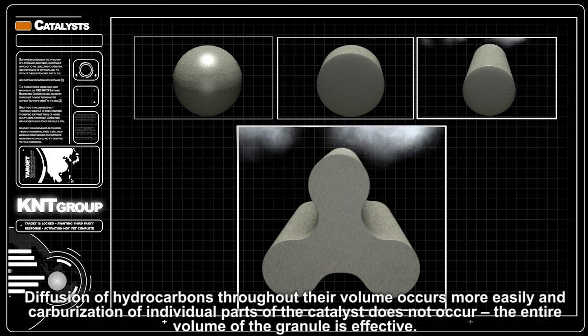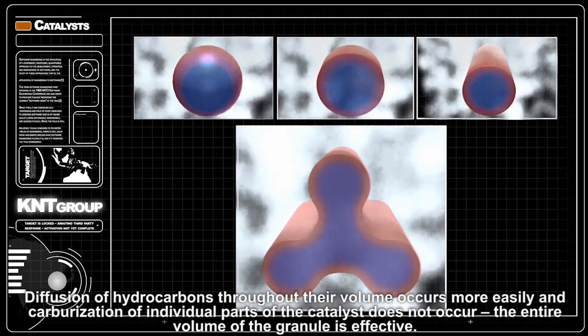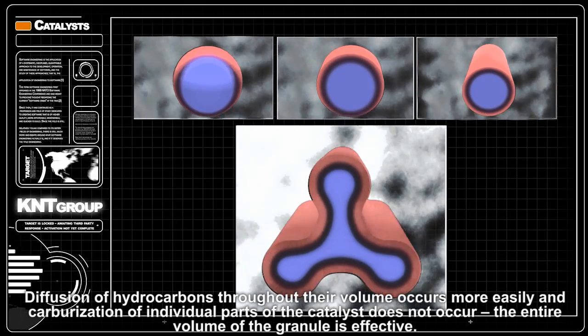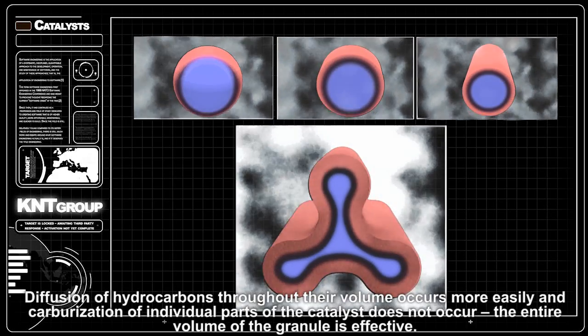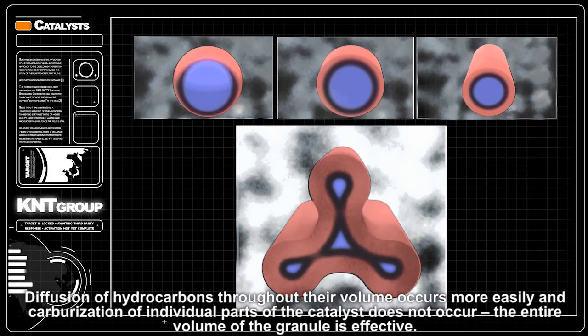Diffusion of hydrocarbons throughout their volume occurs more easily and carburization of individual parts of the catalyst does not occur. The entire volume of the granule is effective.